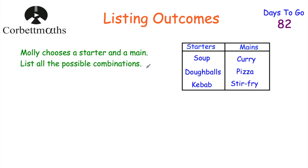Now let's list our possible outcomes. Whenever I'm listing outcomes, I like to work through in order. I'm going to start with soup — soup and curry, soup and pizza, and then soup and stir fry. I'll just use the letters S and C and so on rather than writing the full words. So we've got soup and curry, soup and pizza, and soup and stir fry — all the possible combinations with soup.